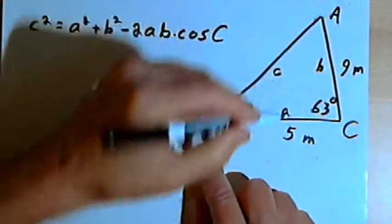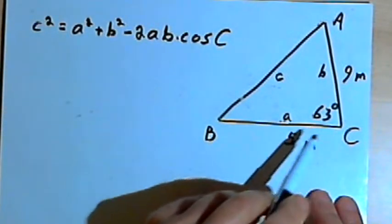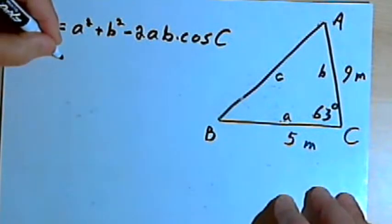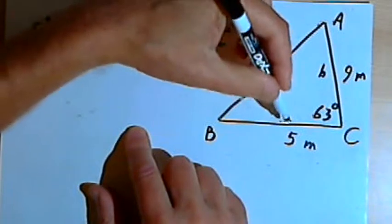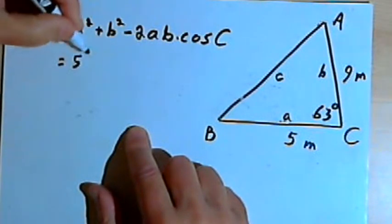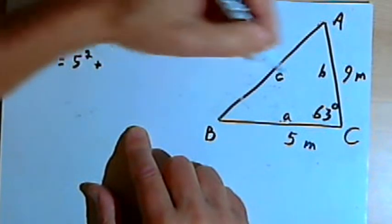So now that I've got these sides and angles labeled, I can fill in the numbers in this formula. So A is 5, I want 5-squared, and then I want b-squared, b is 9.